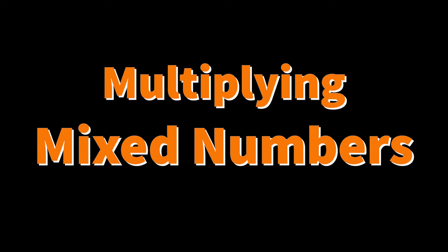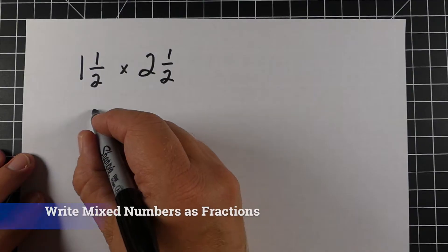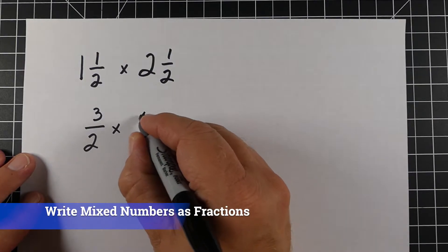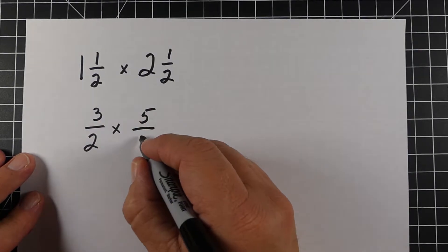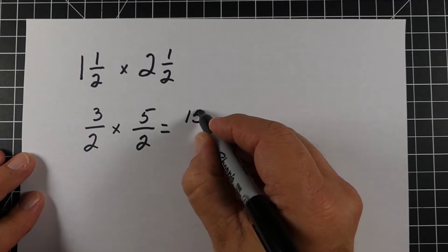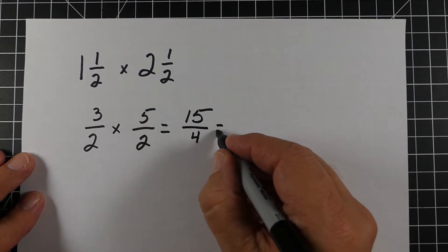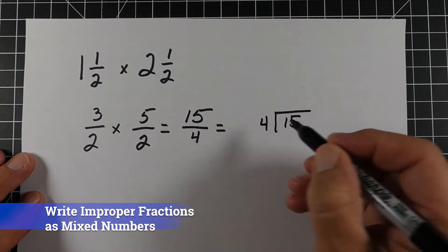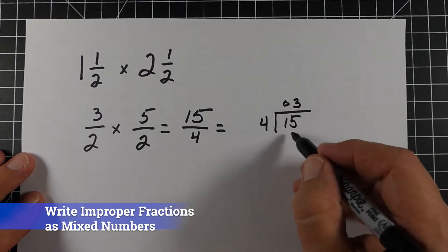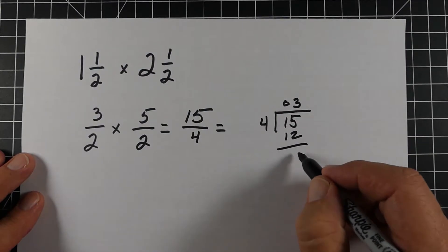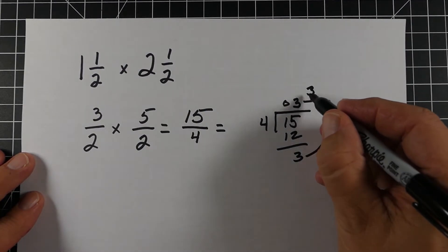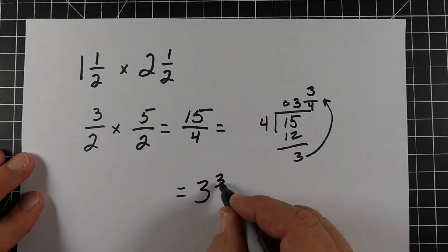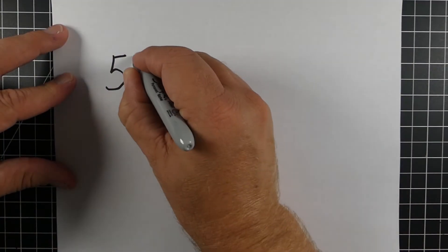Now, multiplying mixed numbers. What we want to do is write these as improper fractions. So one and one-half becomes three over two, and two and a half is five over two. We multiply straight across and get 15-fourths. We divide 15 by four — we get three with a remainder of three, which is our numerator, and we keep the four. So our answer is three and three-fourths.